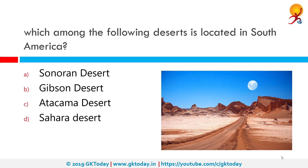Which among the following deserts is located in South America? The correct answer is Atacama Desert. The Atacama Desert is a desert plateau in South America covering a 1000 km strip of land on the Pacific coast west of the Andes mountains. The desert is one of the driest places in the world, as well as the only true desert to receive less precipitation than the polar deserts.